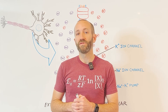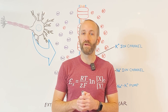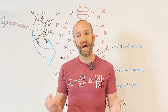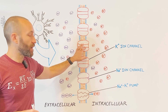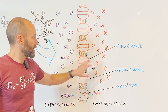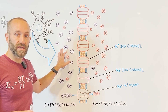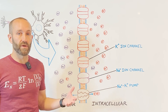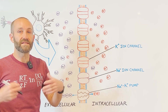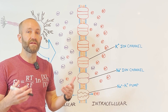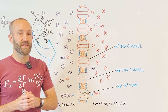An action potential is an electrical impulse, and to understand how it occurs, it's important to first understand the electrical properties of a neuron at rest when it's not firing an action potential. A neuron, like any other cell in the body, is surrounded by a cell membrane that separates the intracellular environment from the extracellular environment. The intracellular and extracellular spaces are each filled with fluid, and suspended in that fluid are charged particles called ions. These ions play an important role in creating the conditions that are just right for an action potential to occur, and there are a couple we need to pay special attention to.